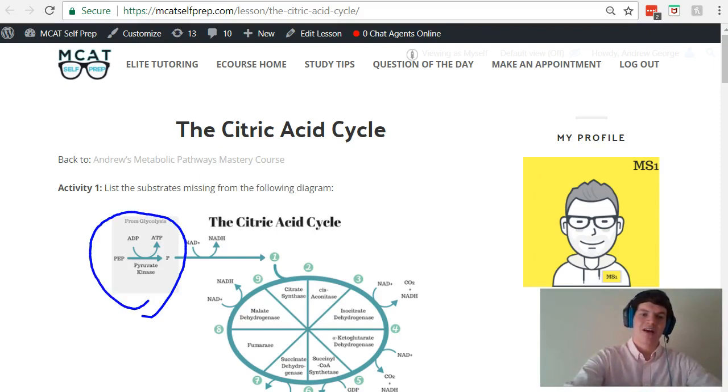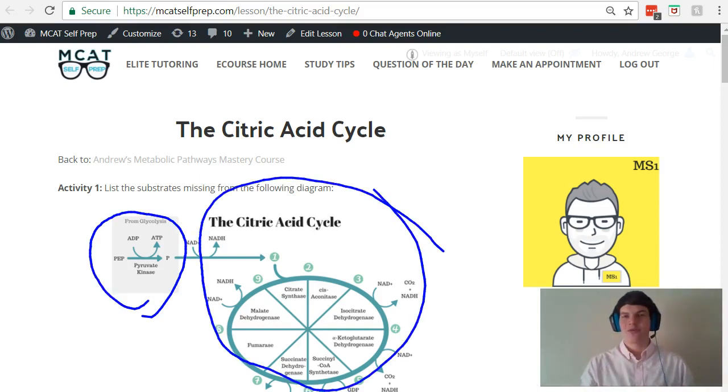For instance, in this diagram, I show you how glycolysis relates to the citric acid cycle. And I think that's something you'll really find beneficial to give you a bigger overall picture of how all these individual pathways relate to each other.